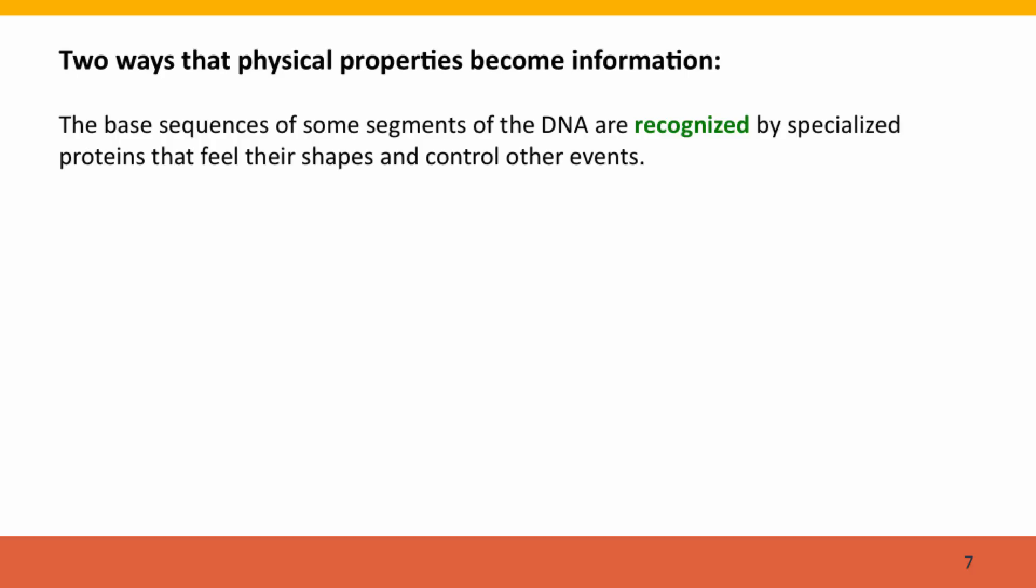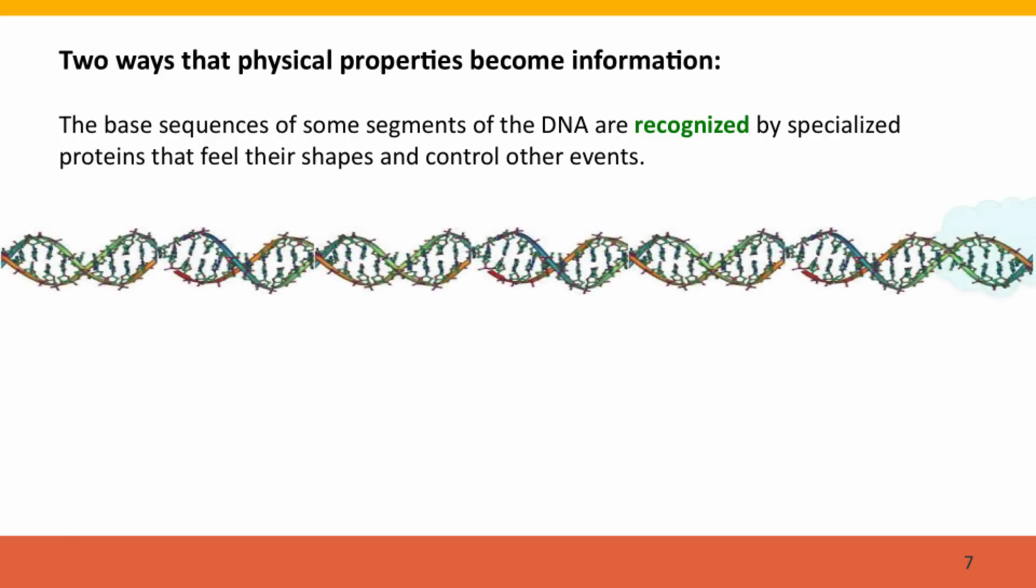So there are two ways that the physical properties of DNA become information. The one that has to happen first isn't coding for proteins. Instead, it's the ability of specialized DNA binding proteins to feel the shapes of the DNA and bind to particular sequences. Here's a DNA molecule. A regulatory protein feeling its way along the DNA until it comes to a place that has the right sequence of bases that it's able to bind to. This protein can feel the sequence even though the DNA is still base paired in its double helix. This protein, having found its appropriate sequence, is going to cause something to happen—maybe DNA replication or some other process.